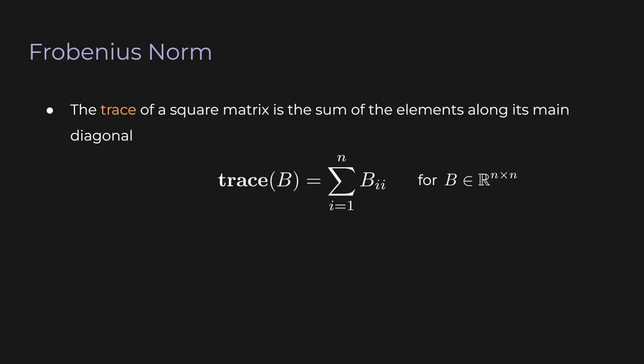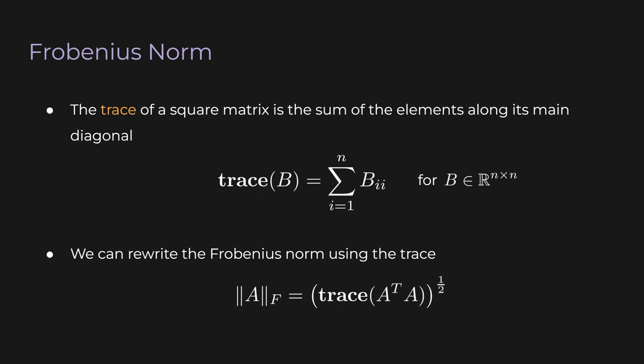There's another way to write the Frobenius norm using the trace of a square matrix — the sum of its main diagonal elements. The Frobenius norm equals the square root of the trace of A transpose A. It's interesting how A transpose A keeps appearing. Verifying that this expression is equivalent to the element-wise definition is a good exercise.